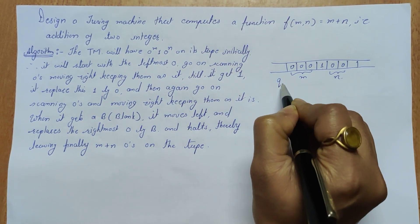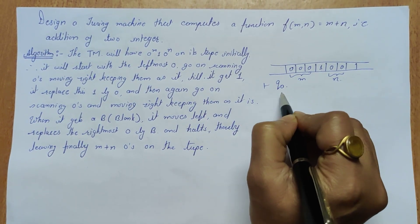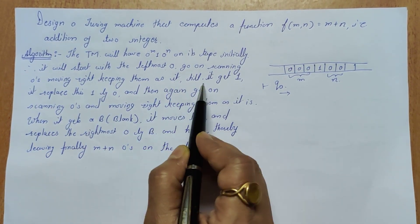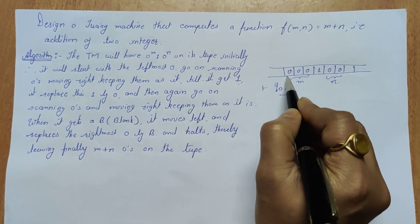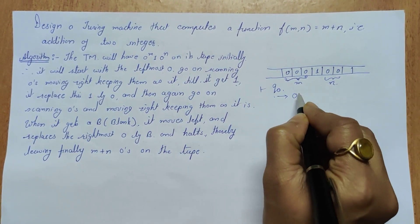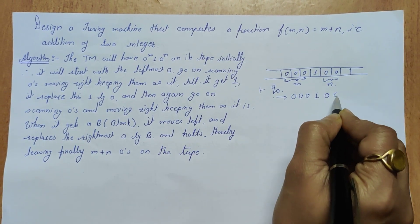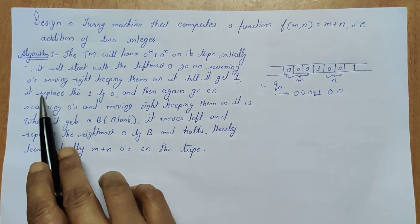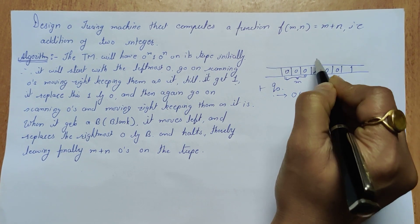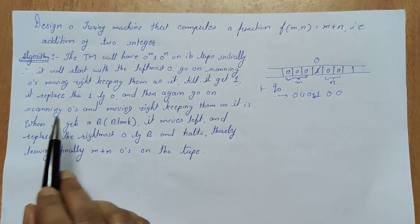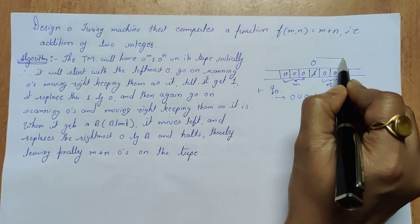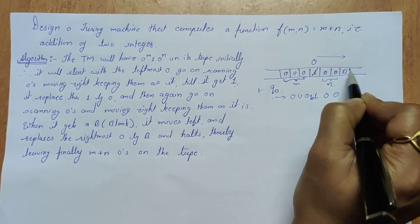The Turing machine starts with the leftmost zero, scanning zeros and moving right, keeping them as they are, until it gets a 1. On getting the 1, it replaces that 1 with a 0, then continues scanning zeros and moving right.